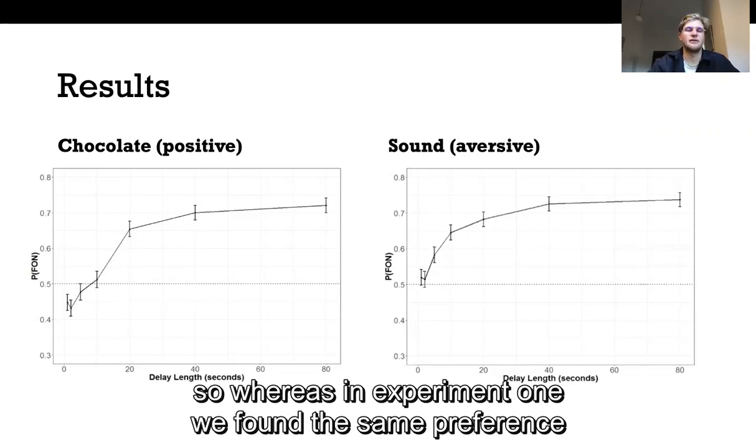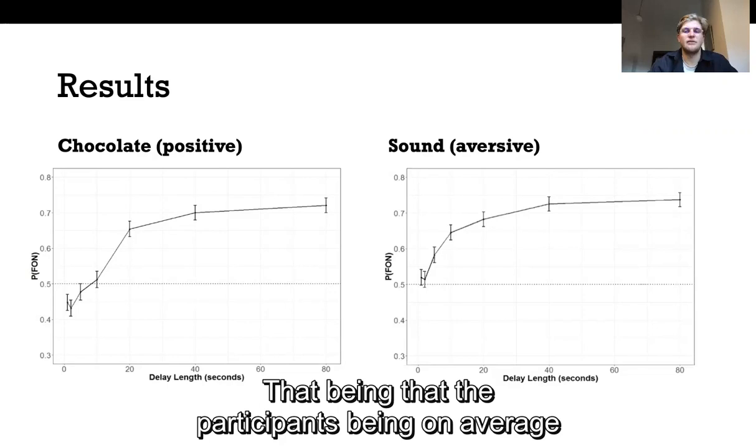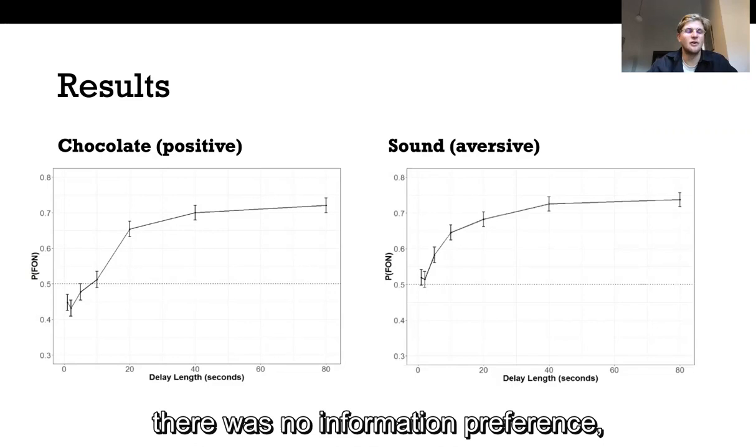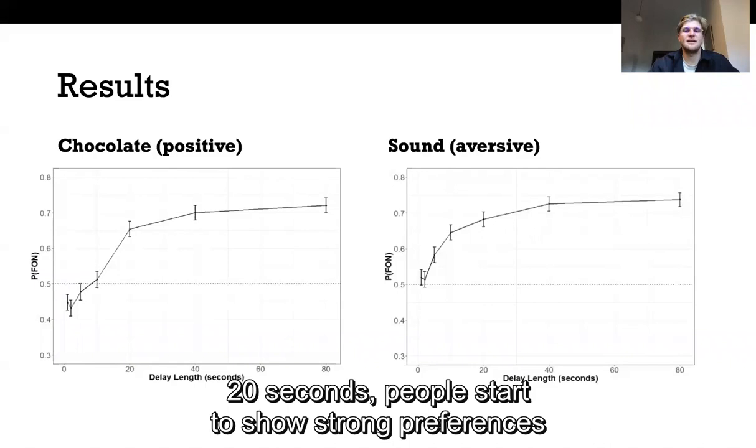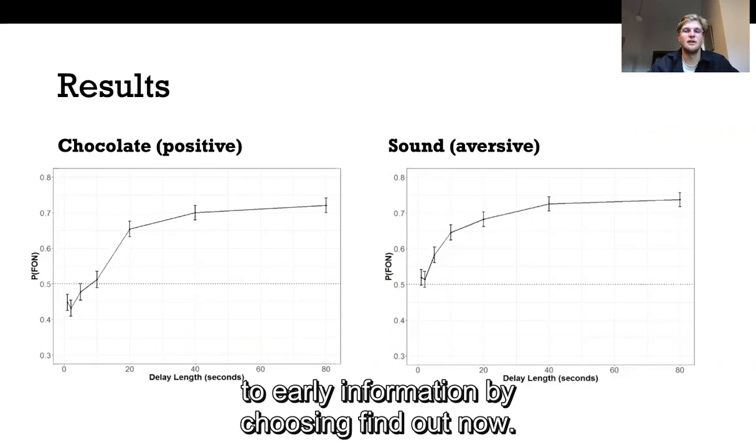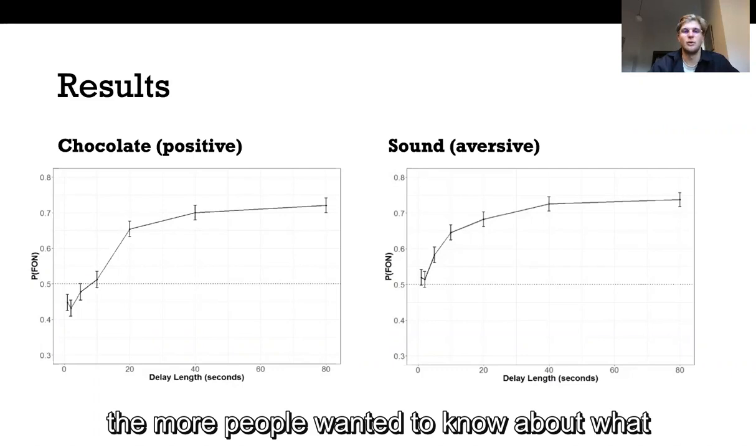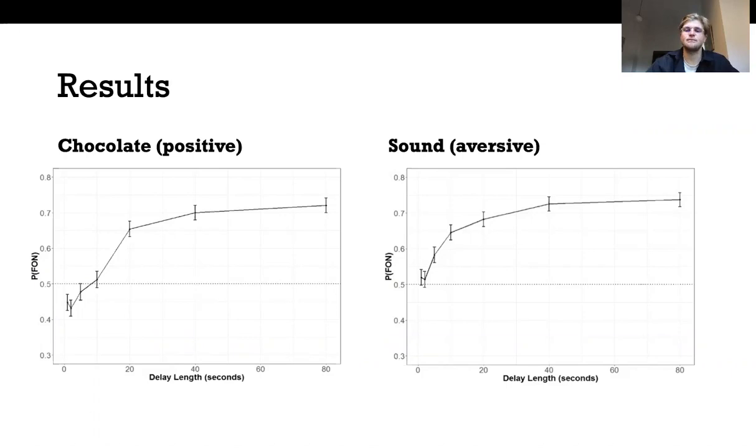We did however find strong evidence of a delay effect this time. So whereas in experiment one we found the same preference across delays here we found a strong difference. That being that participants on average were indifferent at short delays. So you can see at one to five seconds there was no information preference. People were indifferent as to whether they were finding out about a delayed outcome or keeping it a secret. When however you look at delays of longer than 20 seconds people start to show strong preferences for early information by choosing find out now. So in short the longer the delay between receiving early information and the actual outcome the more people wanted to know about what that outcome was going to be by clicking find out now.